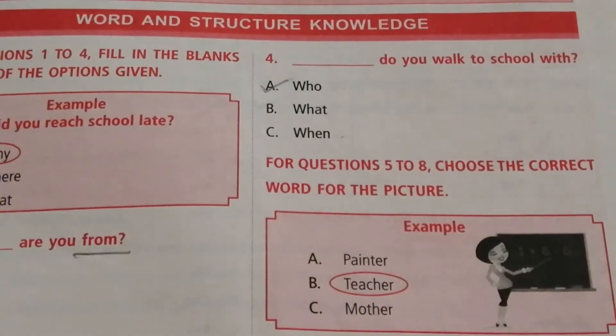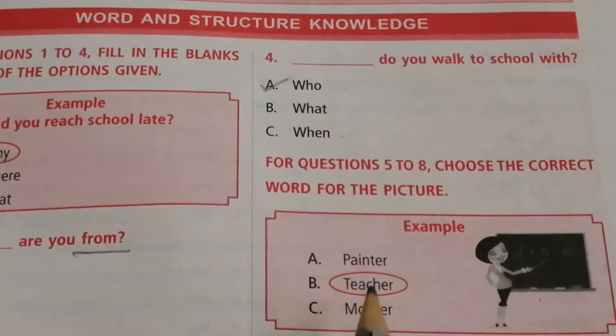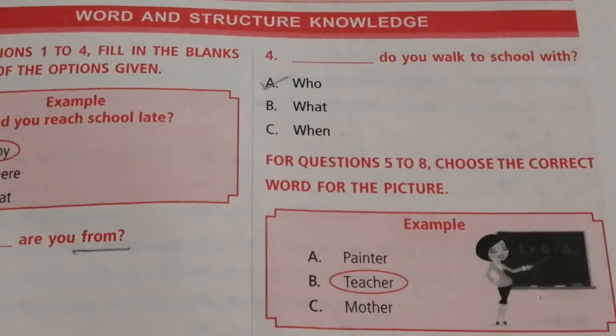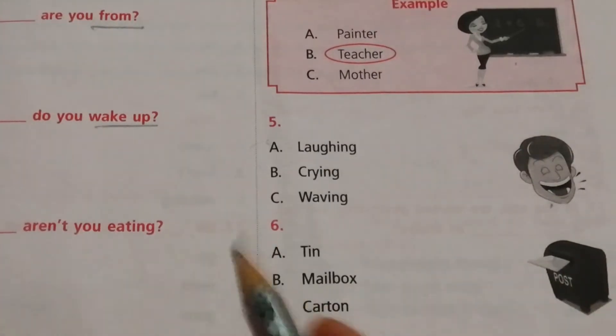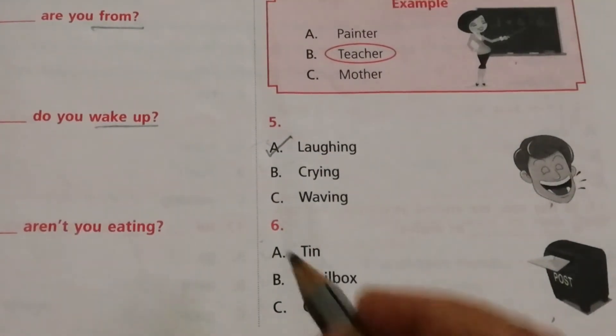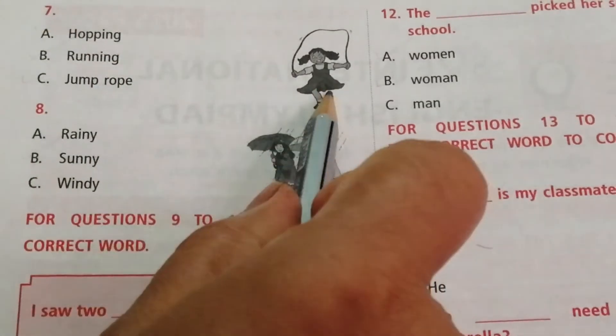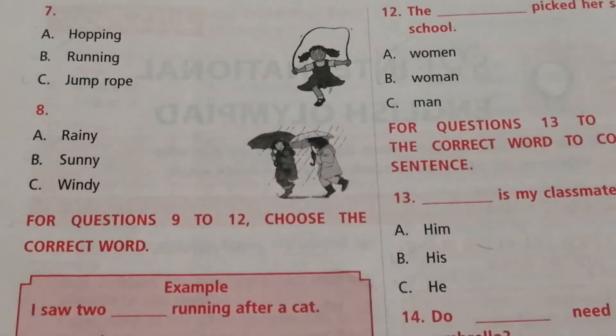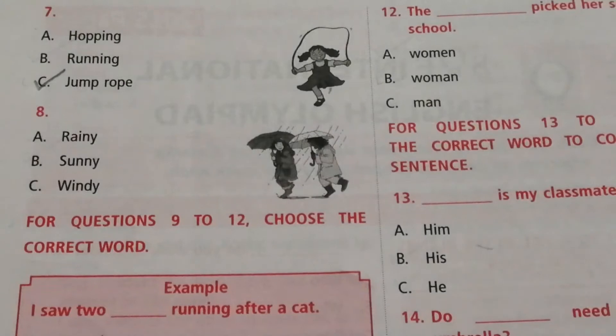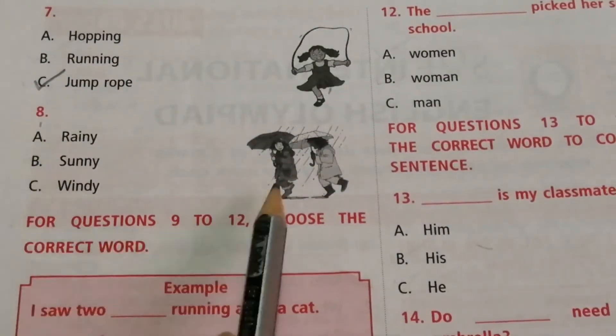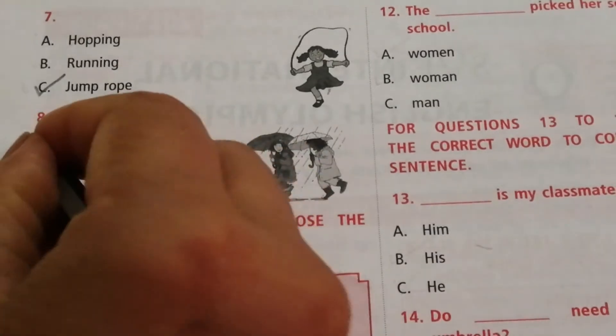For questions 5 to 8, choose the correct word for the picture. Question 5: Look at the picture. The answer is A — laughing. Question 6: Look at the picture. The answer is B — mailbox. Question 7: Look at the picture. The answer is C — jump rope. Question 8: Look at the picture. The answer is A — rainy.